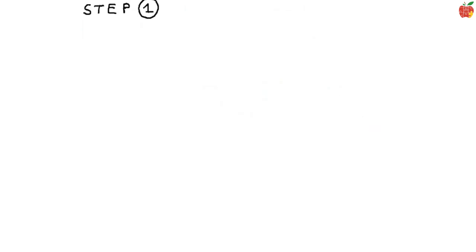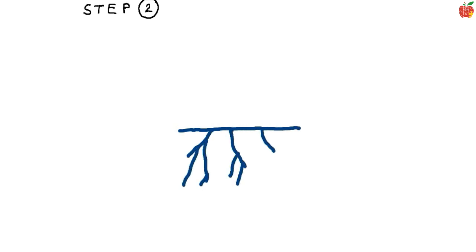Step 1: the most important part of the diagram — the straight line. Step 2: let's get to the root of the diagram. Draw the roots below this main line. Simple and perfect.